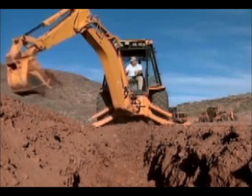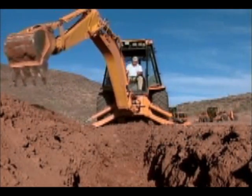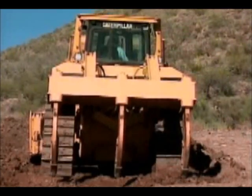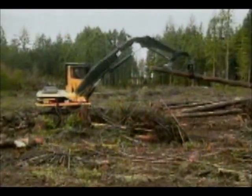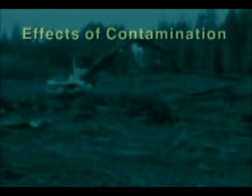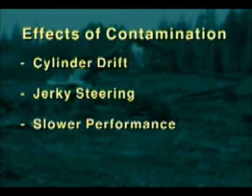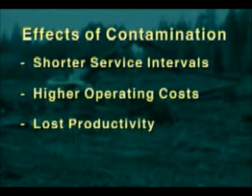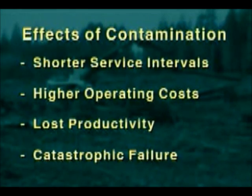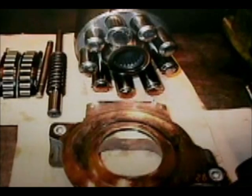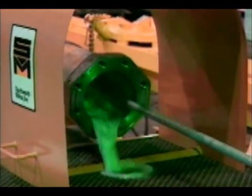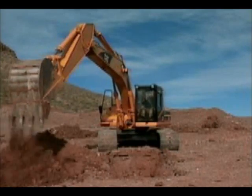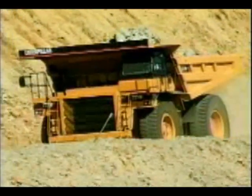Contamination can affect any machine with hydraulic capabilities. A hoe that swings too far on a backhoe loader, or one track that runs faster than the other, can be a sign of contamination. Equipment owners and operators also see other common effects of hydraulic system contamination, including cylinder drift, jerky steering, slower performance, erratic operation, shorter service intervals, higher operating costs, lower productivity, and possible catastrophic failure. The pump is one of the most expensive components to fix on a hydraulic system, and in the event of a catastrophic failure, it may take days or even weeks to repair a contaminated hydraulic system. That's why it's so important that the means exist today to prevent such problems from occurring.